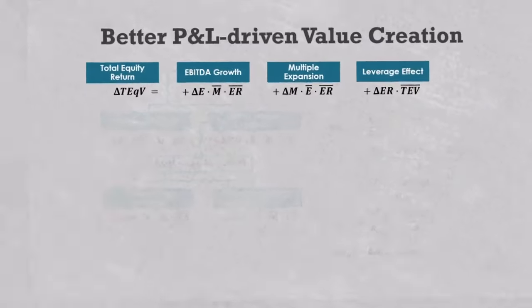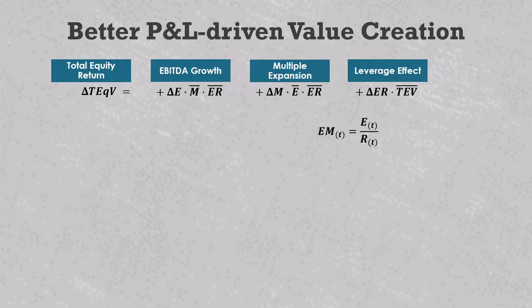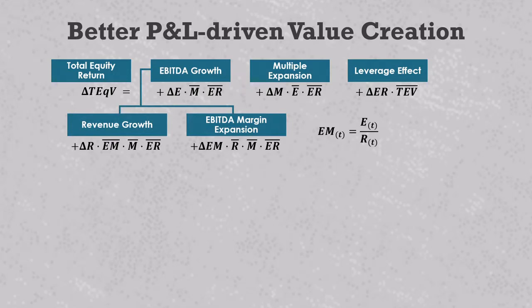Let's go back to our derivative model starting point. We know that the EBITDA margin is equal to EBITDA divided by revenue, and this allows us to replace EBITDA in our formulas with the product of revenue and EBITDA margin. When we run this through the calculus described in VC104, the EBITDA growth splits up into two new value drivers: one for revenue growth that includes the change in revenue and the average holding period EBITDA margin, and another for EBITDA margin expansion that includes the change in the EBITDA margin and the average holding period revenue.